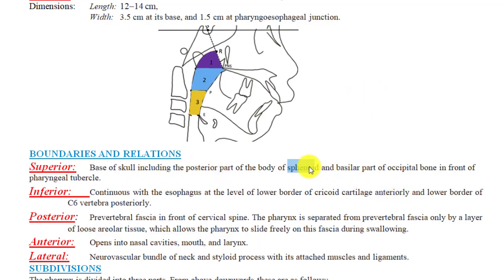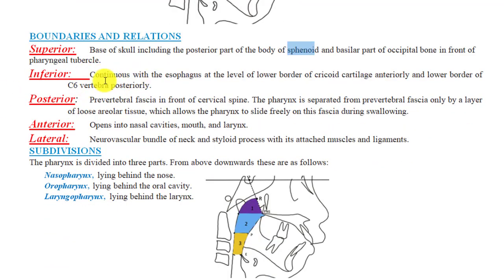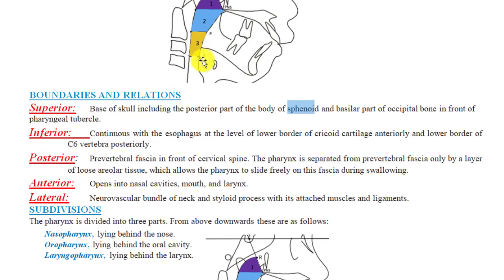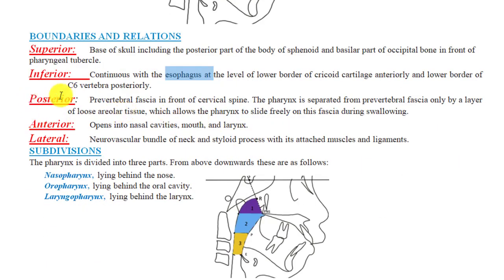The inferior boundary: the pharynx continues with the esophagus at the level of the lower border of the cricoid cartilage anteriorly, and the lower border of the C6 vertebra posteriorly. The opening of the esophagus is also located at this level.